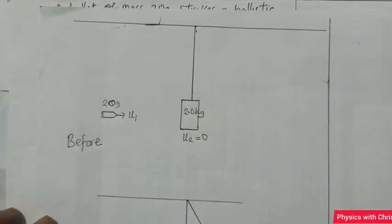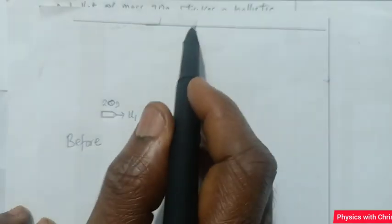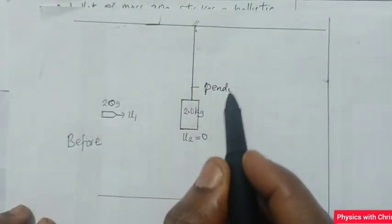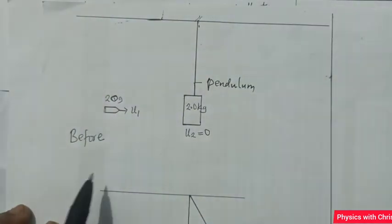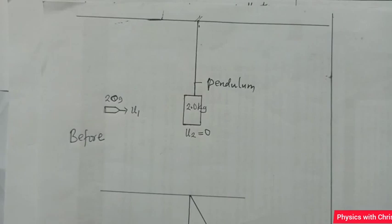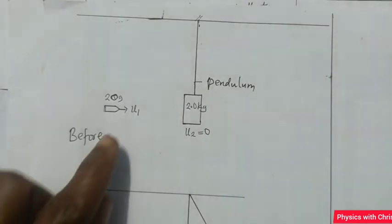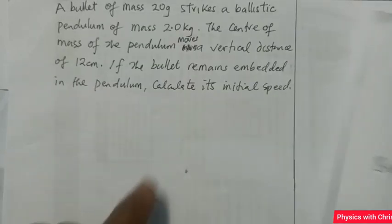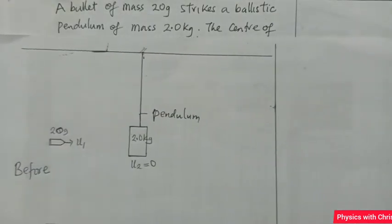Here I have the ballistic pendulum hanging from a support point. The mass of the pendulum is 2 kg, and the bullet has a mass of 20 grams. You can see very clearly that the initial speed of the bullet is not given — we have to find that. That is what the question asks: calculate the initial speed of the bullet.